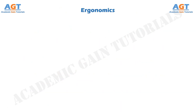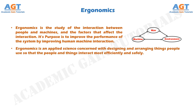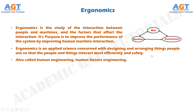Ergonomics is the study of the interaction between people and machines, and the factors that affect the interaction. Its purpose is to improve the performance of the system by improving human-machine interaction. In other words, ergonomics is an applied science concerned with designing and arranging things people use so that the people and things interact most efficiently and safely. So, it is also called Human Engineering or Human Factors Engineering.